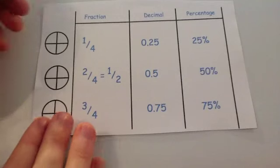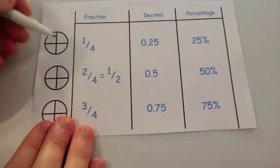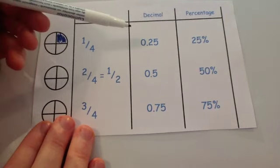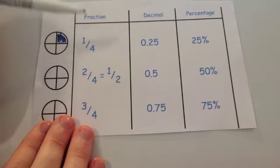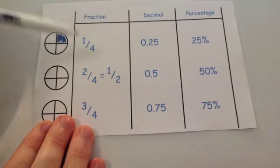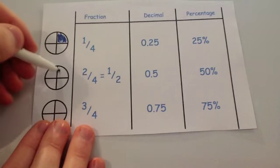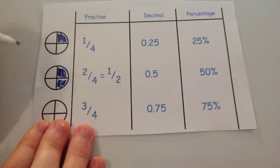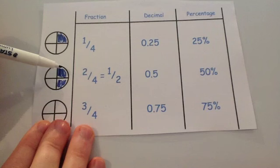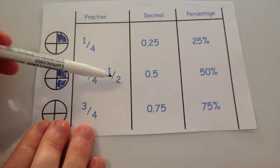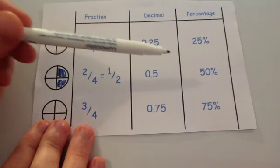If you were to shade in a quarter of a shape, it would be one out of the four sections. One quarter equals 0.25, since one divided by four is 0.25, and that's 25%. Two quarters means shading two out of four sections — and as you can see, that's the same as a half. Two quarters equals a half, which is 0.5 or 50%.